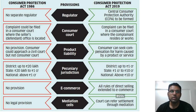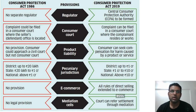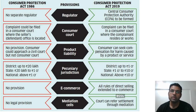The pecuniary jurisdiction — that is the monetary limits for different forum levels — has also changed significantly. Under 1986: district level was up to 20 lakhs, state level was 20 lakhs to 1 crore, and national level was above 1 crore. But under 2019, district level is now up to 1 crore, state level is 1 crore to 10 crore, and national level is above 10 crore. As India's GDP and business have grown, the jurisdiction limits have been revised accordingly.